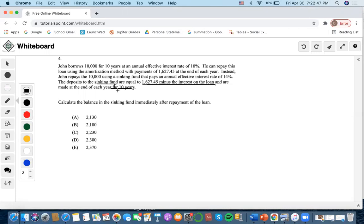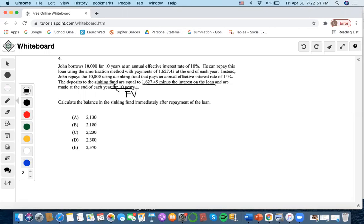Since we know that sinking fund is a future value concept, we can see what they're talking about. The deposits to the sinking fund are equal to $1,627.45 minus the interest on loan. What is the interest on the loan? Since John is borrowing this amount, $10,000 is the loan at an effective interest rate of 10%. So $10,000 times 10% equals $1,000.